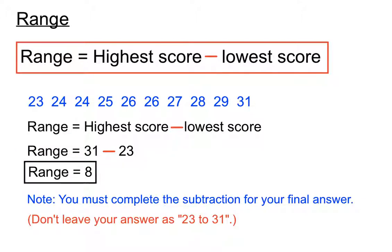A lot of students actually leave their answer for range as indicating that the scores range from 23 up to 31. Now that's like a plain English version of the range, but technically the mathematics version of the range is to complete that subtraction and say that the range of these values is 8.